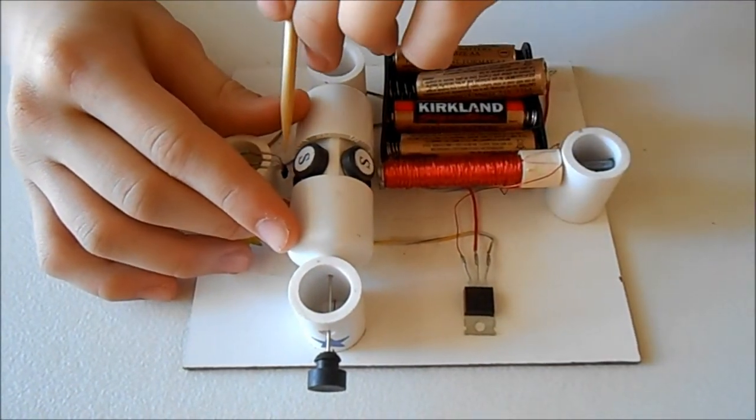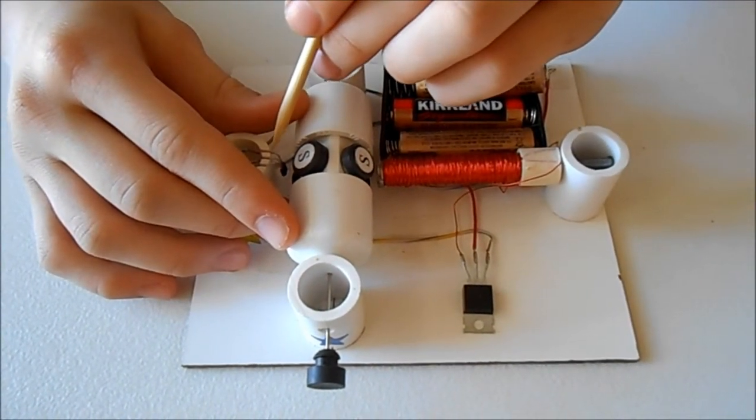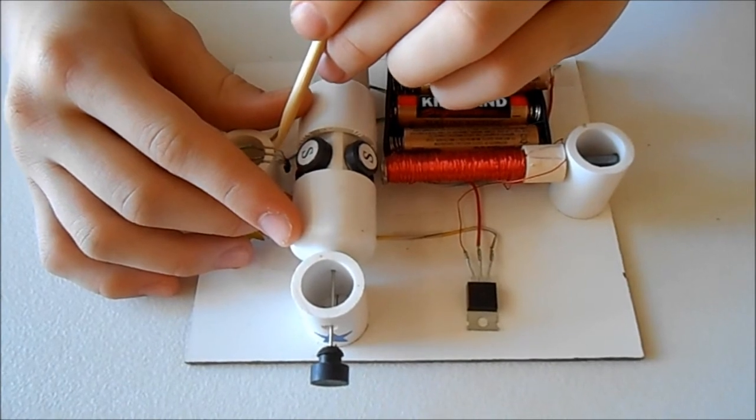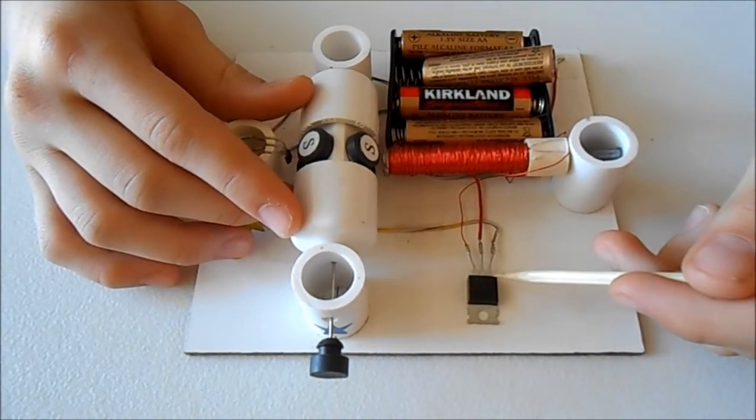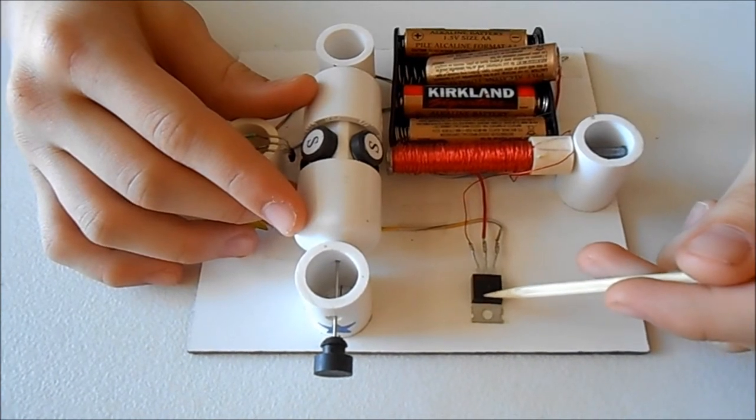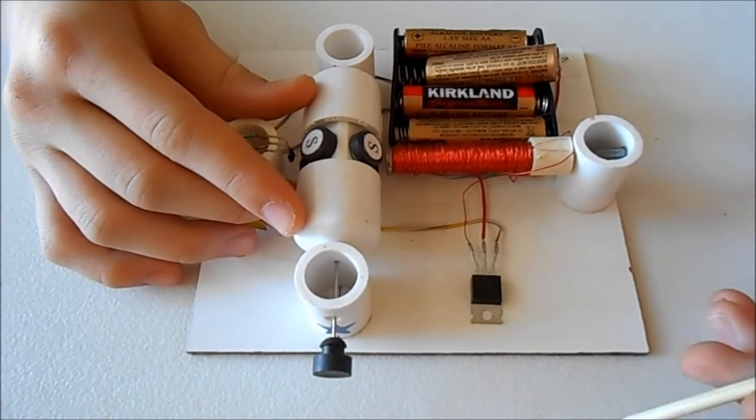As soon as the first magnet gets out of the working range of the Hall Effect switch, the output current from it stops. There is no base current and transistor closes, not allowing the big collector current to go through.